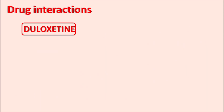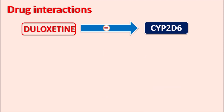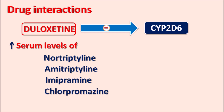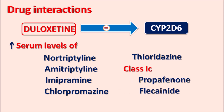Duloxetine is metabolized by CYP2D6, but at the same time this drug also inhibits CYP2D6 activity. So Duloxetine can inhibit the metabolism and increase serum levels of other drugs such as nortriptyline, amitriptyline, and imipramine — all TCAs. Similarly, phenothiazine antipsychotics like chlorpromazine and thioridazine, and class 1C antiarrhythmics like propafenone and flecainide — all these drugs are affected by Duloxetine and their levels are increased in its presence. Particularly, thioridazine is contraindicated with Duloxetine because of this drug interaction.